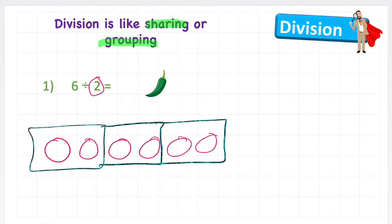And then all I now need to answer is how many groups do I have? Well, I have one, two, three groups. So my answer to 6 divided by 2 is 3. Exactly the same answer, just a different method.